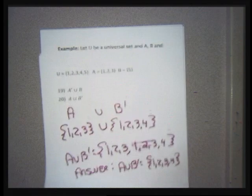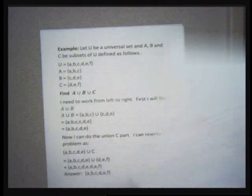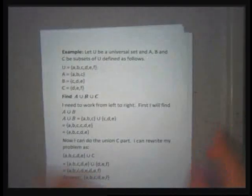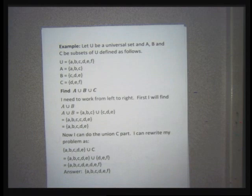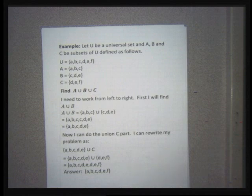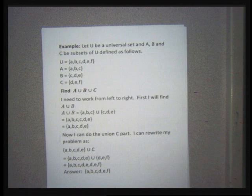Now we're going to kick it up a notch and add a set C, which makes it a little harder but not really any different. When we have three sets, sometimes problems will have parentheses. We do the inside of the parentheses first — just like regular order of operations. Otherwise we work from left to right. It's not like intersection gets done before union; with sets, it's parentheses first, then left to right.